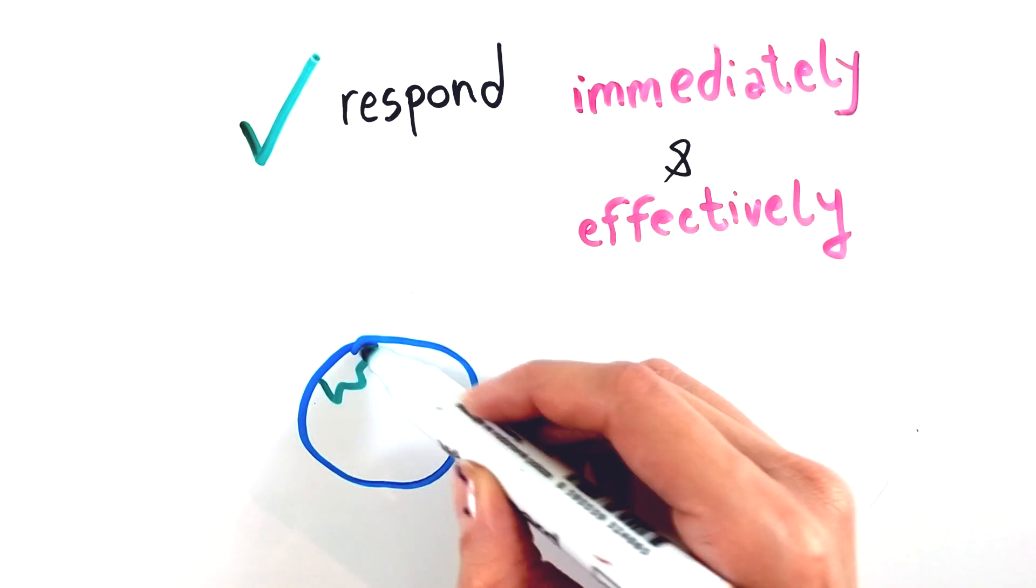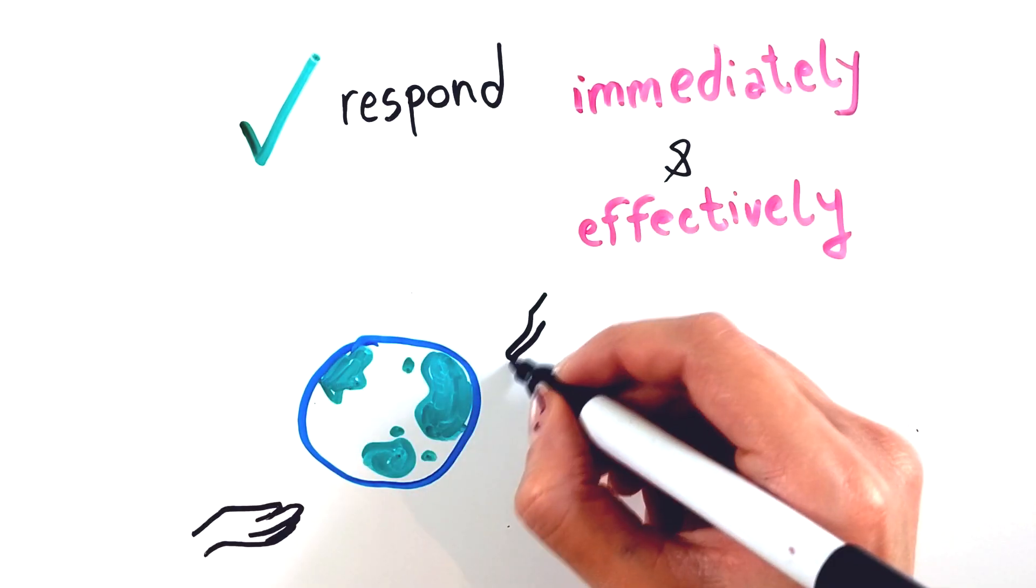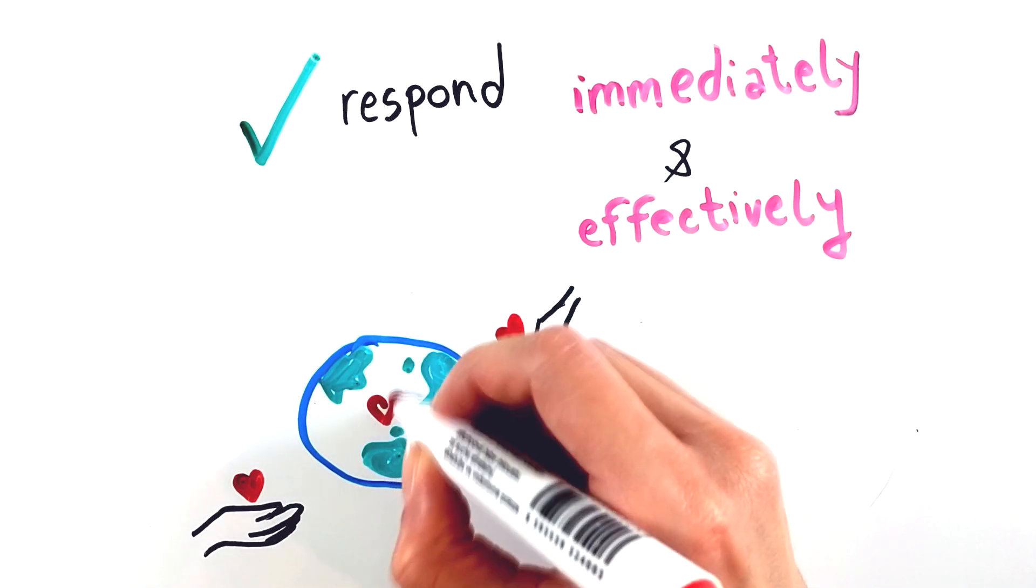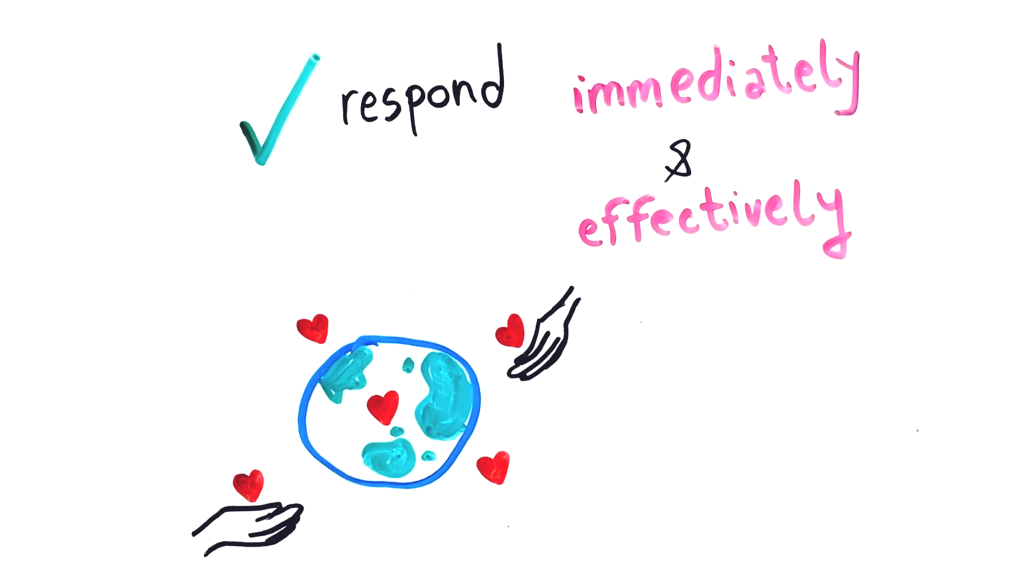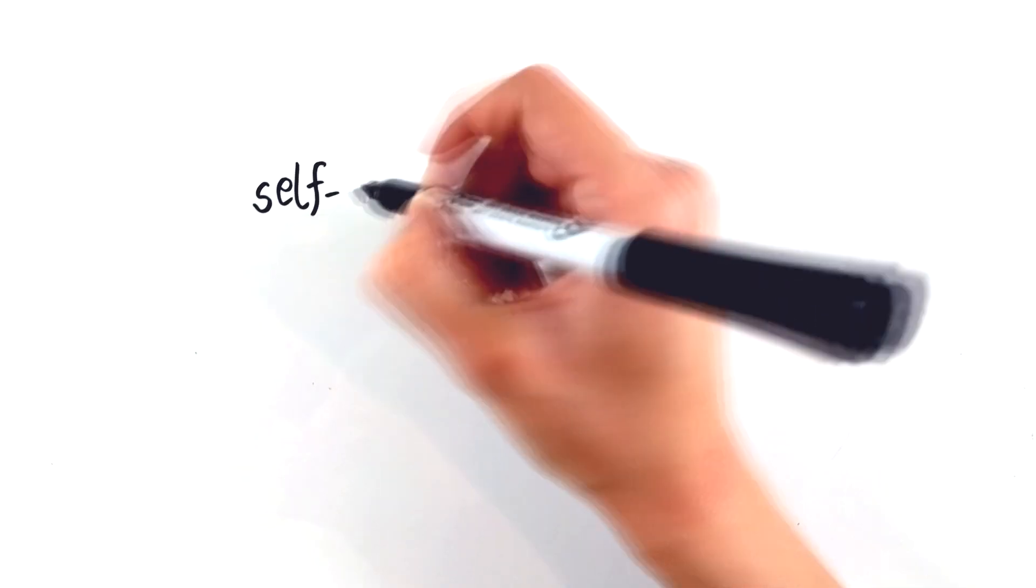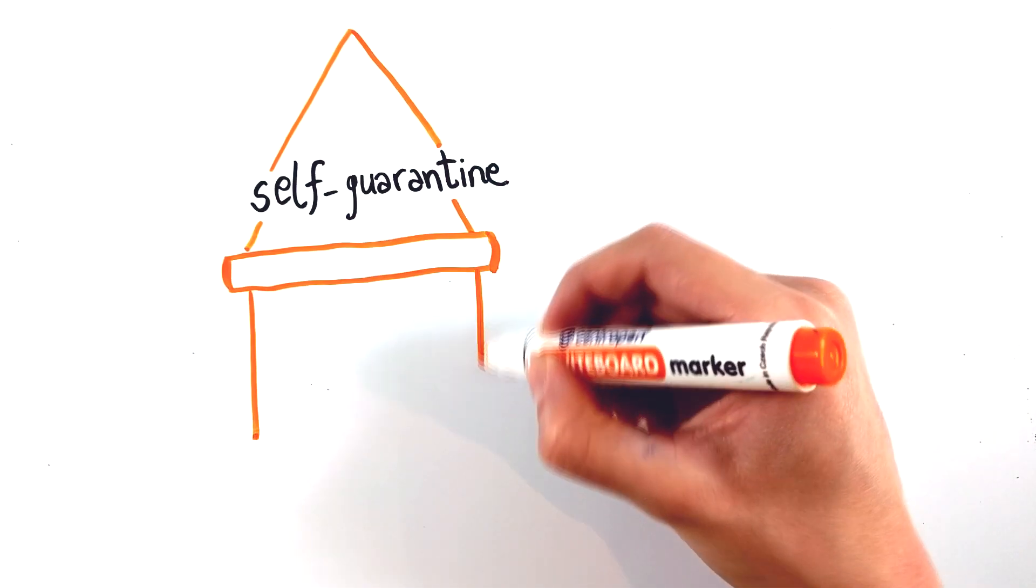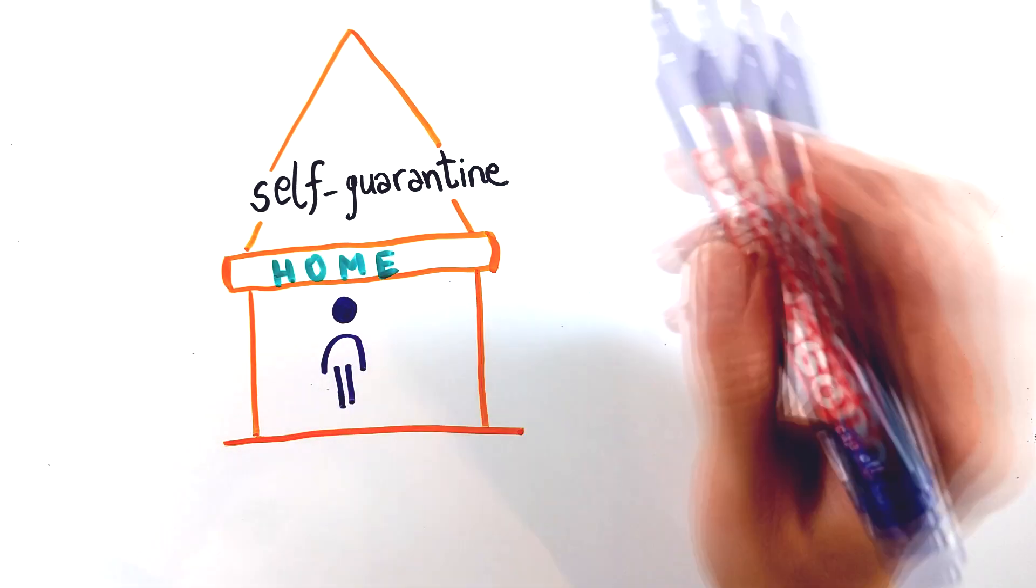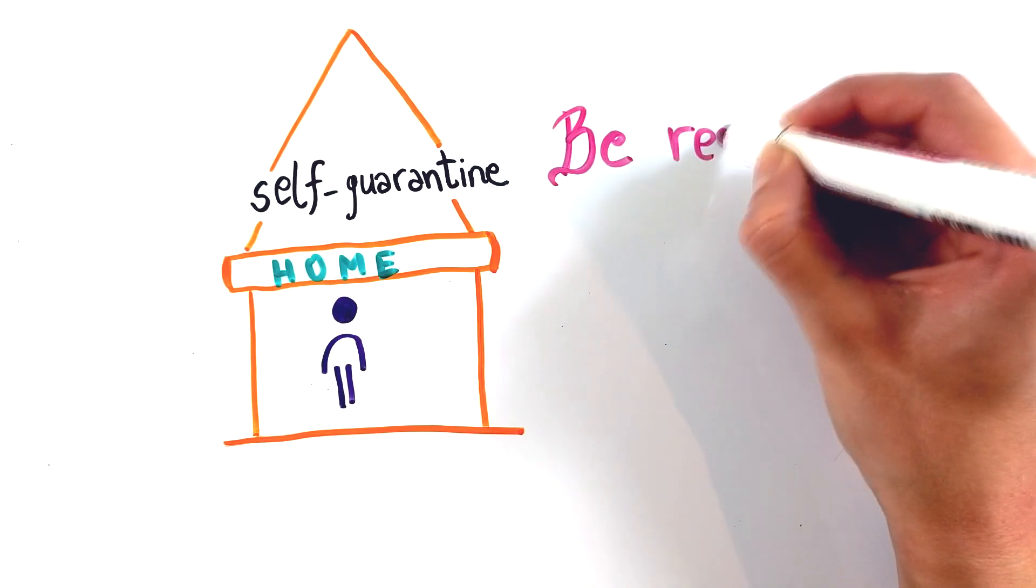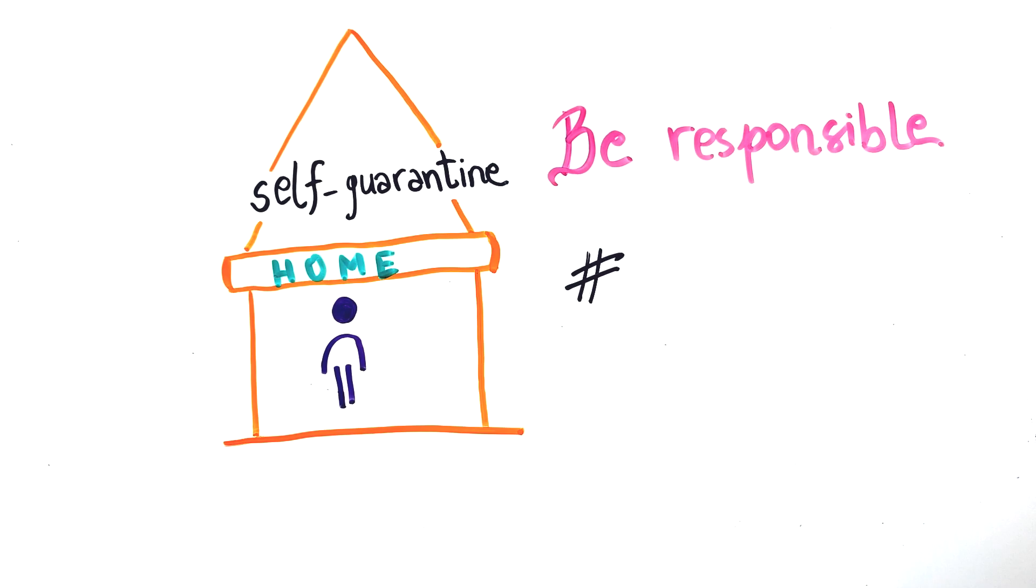Taking all of this into account, the only way we can slow down the disease spread and prevent further infections is to respond immediately and effectively in the early stages of a pandemic. Each one of us can contribute to limiting the infection spread by acting according to the implemented measures. Self-quarantine significantly reduces the number of infected people. Early action will save lives, so be responsible and stay at home.